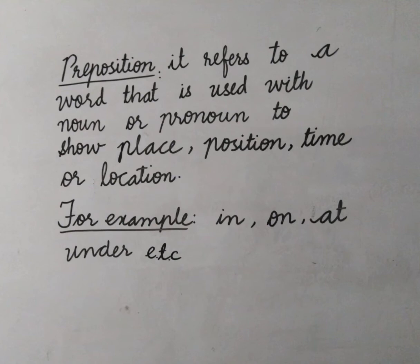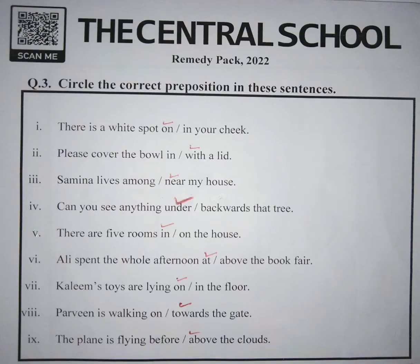Now with the help of these concepts, we will solve our question number 3. In this question, we are having two options in each sentence and we will choose the correct option. The first sentence is: there is a white spot on slash in your cheek. The correct preposition is 'on' as it is locating the position.